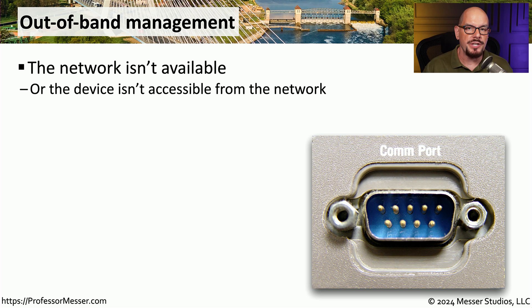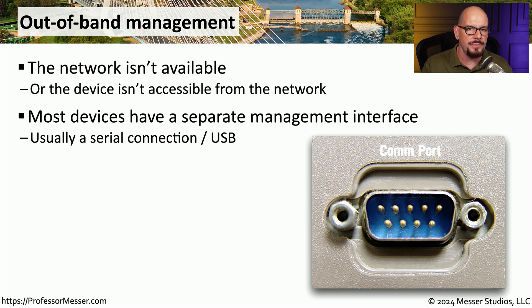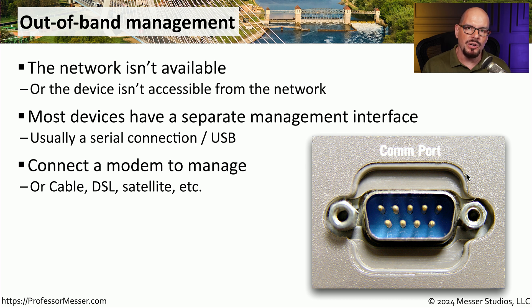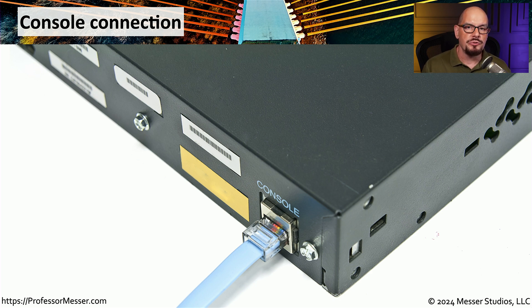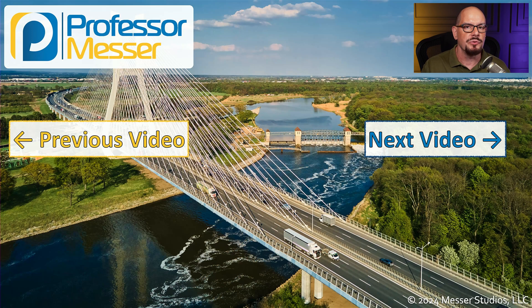If in-band management uses an IP address that we connect to through our existing network, then out-of-band management uses a serial interface that does not use our existing network. Commonly, this would be a separate management or console interface connected via serial, or on more modern devices, USB. This separate console or COM port also allows us to connect a modem — we might use a standard phone line, connect a modem, and dial into that device even when the network is down. In some organizations, you can install a COM server, allowing you to dial into one server and from there jump to other devices. You would need to check your switch, router, or other device to see if there is a serial or console connection that you can directly connect to or use a modem to dial into from a remote site.